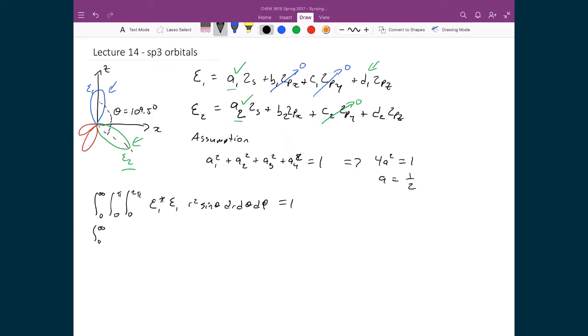So we keep this integral from 0 to infinity, 0 to π, 0 to 2π. Let's explicitly write in ξ1. We've got 1 half times 2s star plus d1 times 2pz star, and 1 half times 2s plus d1 times 2pz. That's going to be multiplied by r squared, sin θ, dr dθ dφ, and that equals 1.